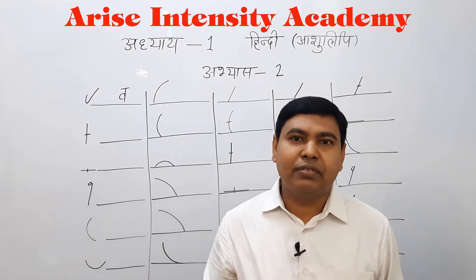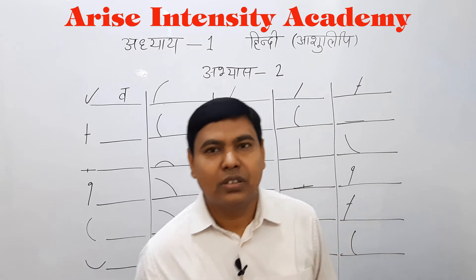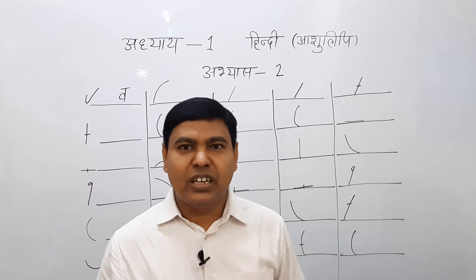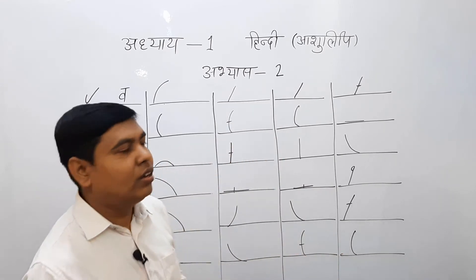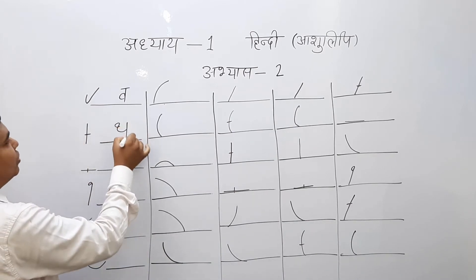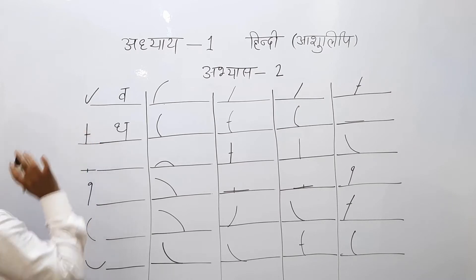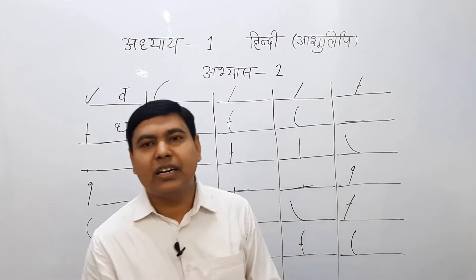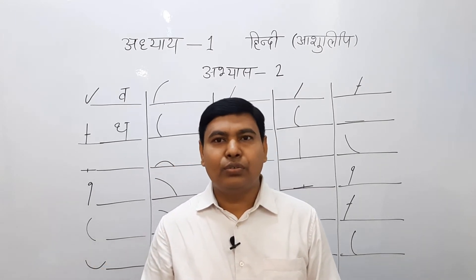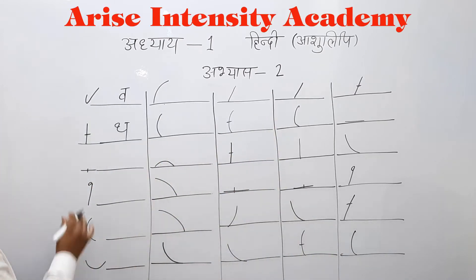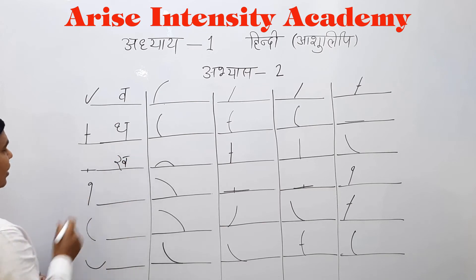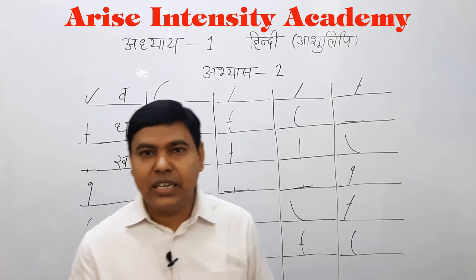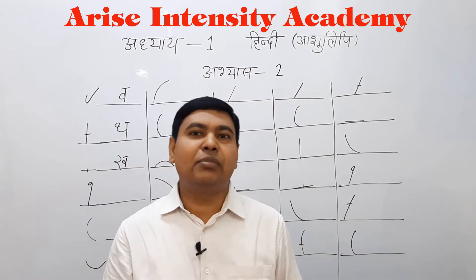The second letter is called Va; Vavah is by the name of Va. We can say ھ — the third letter and the fourth is ھ, which goes from top to bottom, which we call Adho Gami Rekhakshar.